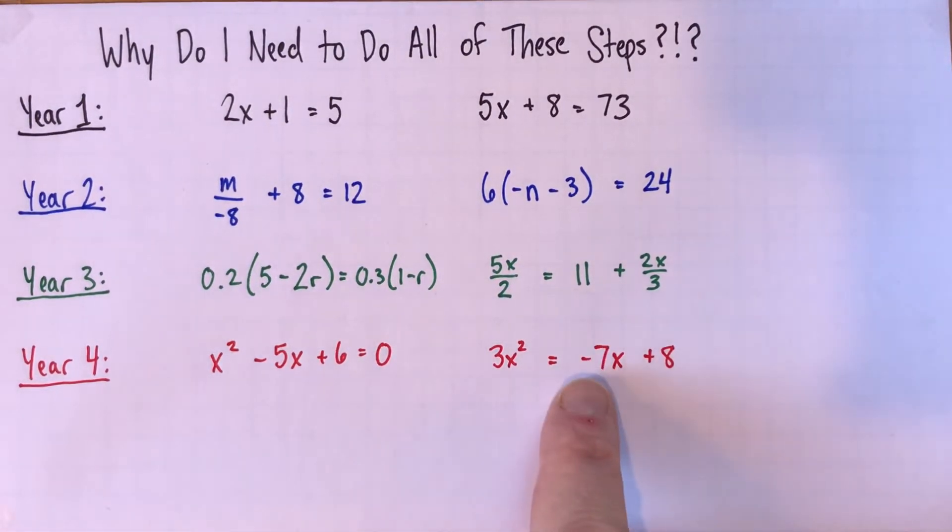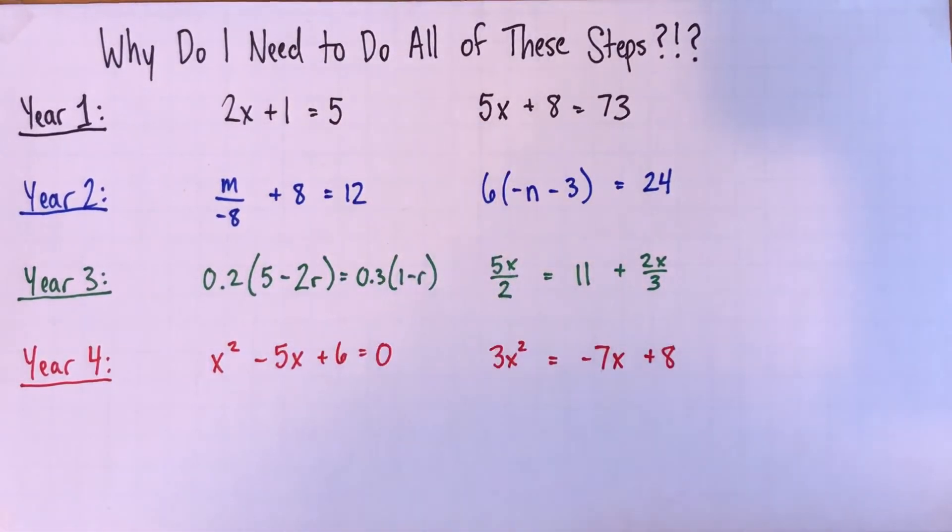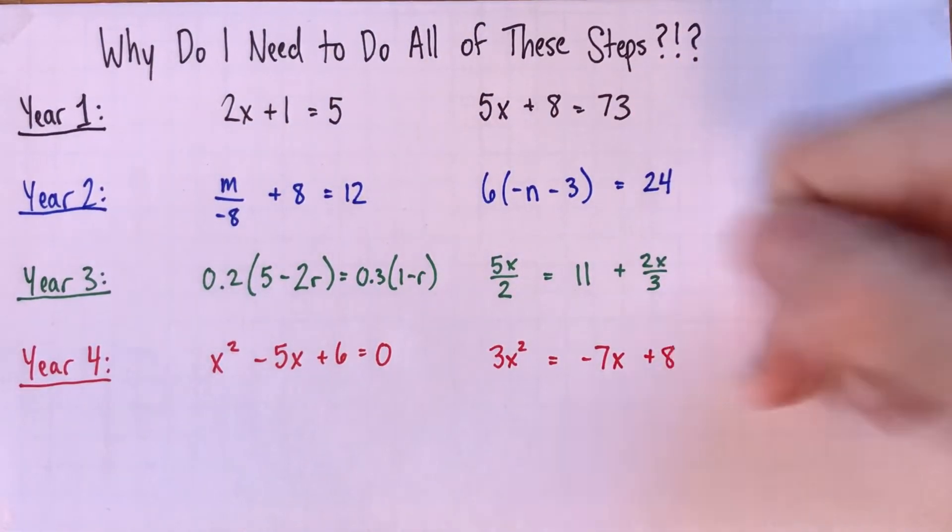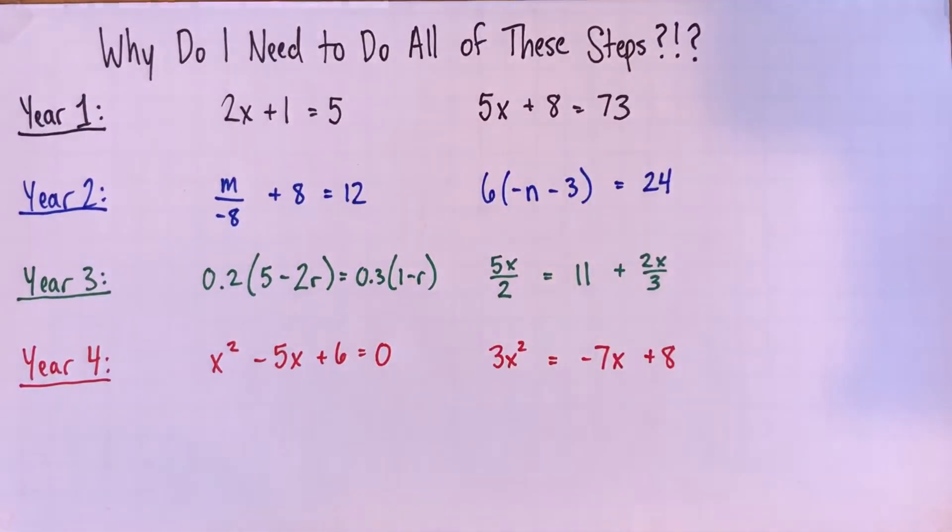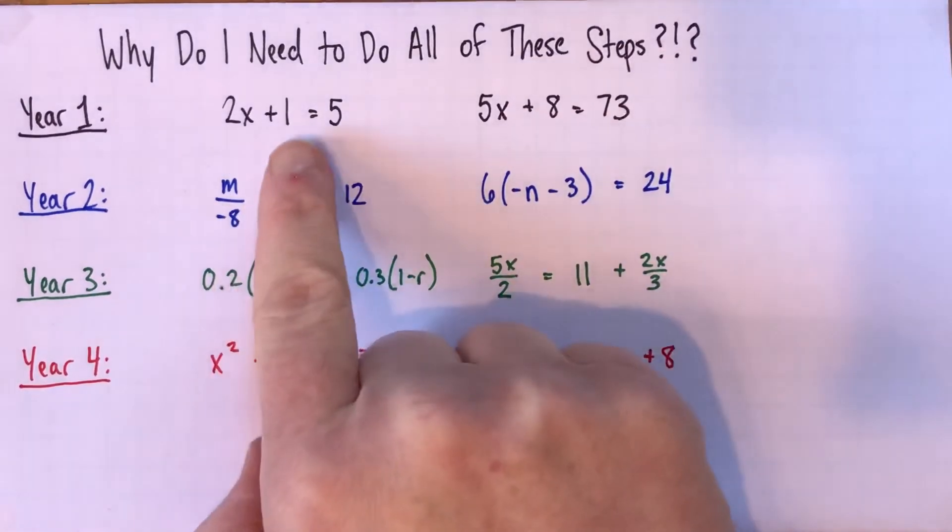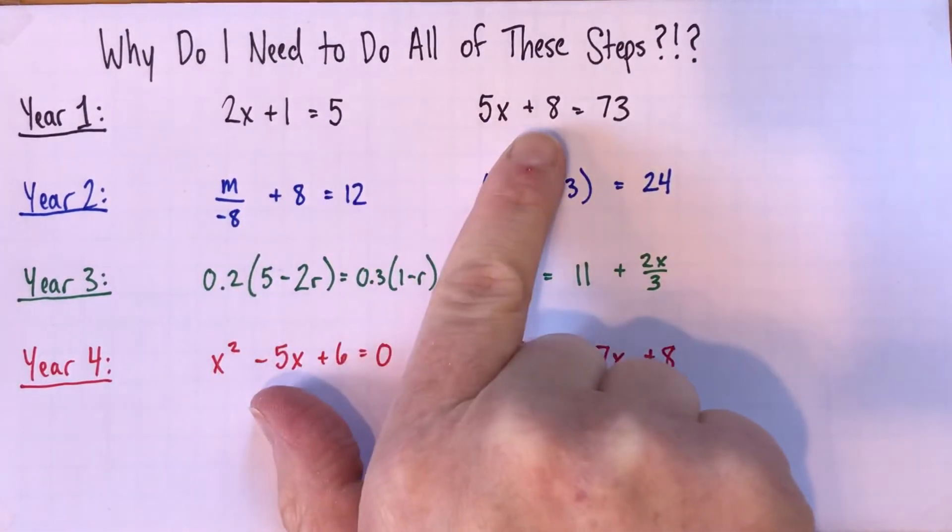So other than this one, you can probably, if you really are patient and organized, you can probably go through and solve any of these by guessing and checking and being really organized. But as we go on and as the equations get more complicated, even from this one to this one, it really becomes less efficient to guess and check and a lot more efficient to do algebraic steps. Because the algebraic steps you need to solve this equation are exactly the same, just the numbers are different.